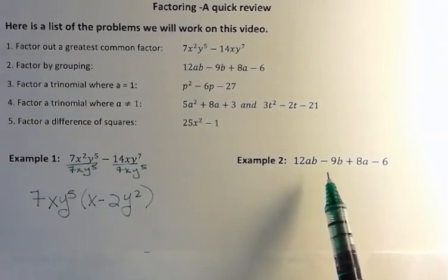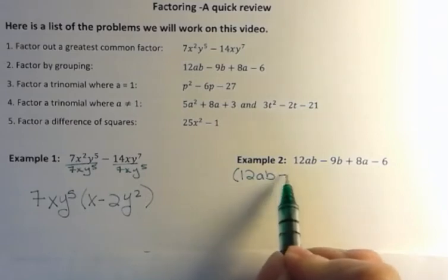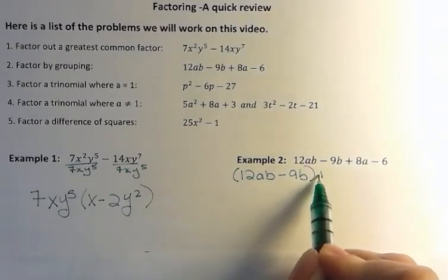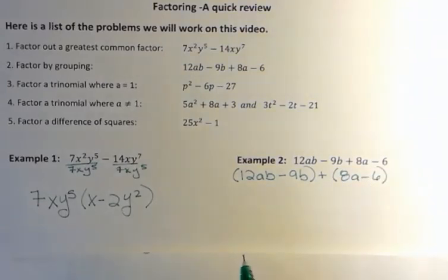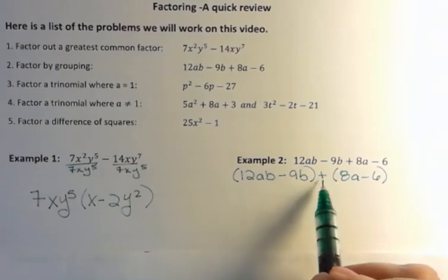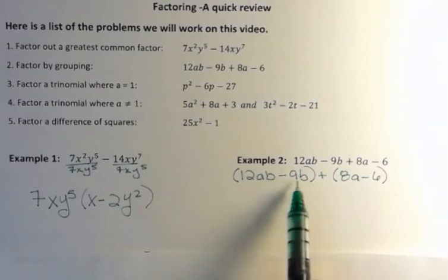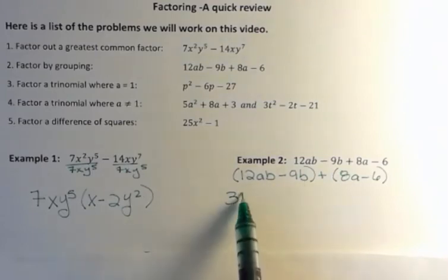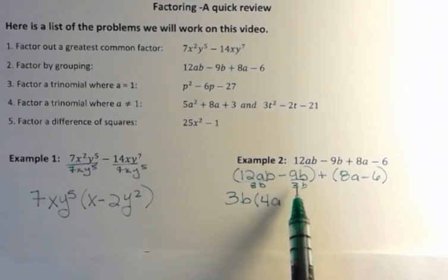For the second one, we're going to talk about factor by grouping. When we factor by grouping, we want to group our terms. Sometimes in harder problems, you have to rearrange to get these to factor. For this one, we're just going to group the first two together and the second two together. Notice that there's a plus in between. What's the common factor for this binomial? They both have a 3 and they both have a b, so I'm dividing both of these by 3b. That's going to leave 4a. And over here, dividing by 3 gives me 3. No b's left.